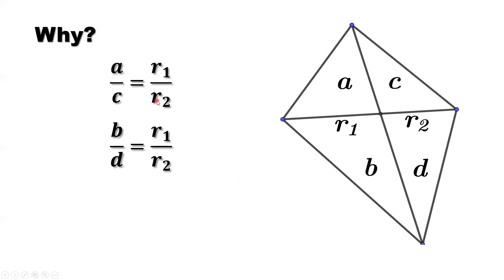So r1 over r2. The right hand sides are equal, so the left hand sides should be equal. That means a over c equals b over d. That's all. Thanks for watching.